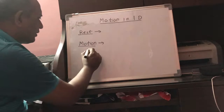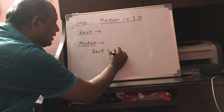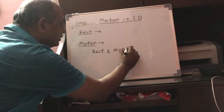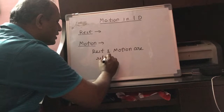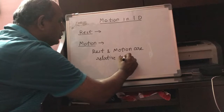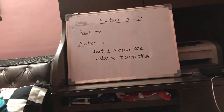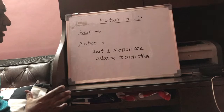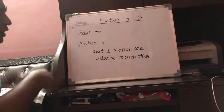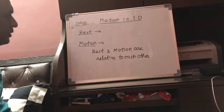There is a very important point here: rest and motion are relative to each other. This means that if an object is at rest with respect to one observer, then it may be in motion with respect to another observer.